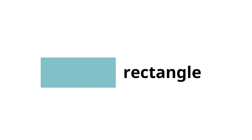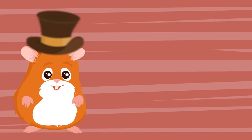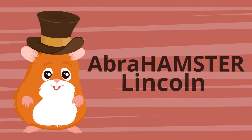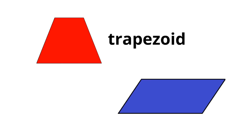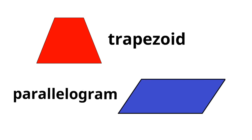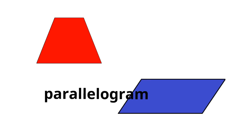Here's the rectangle — it's longer than the square because not all four sides are equal. The trapezoid is a cool shape with two of the sides being parallel to each other. And the parallelogram — another four-sided shape where both pairs of sides are parallel to each other.